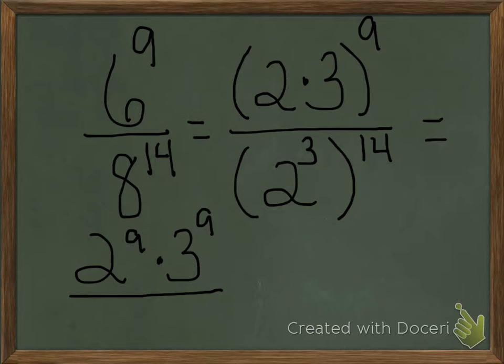2 to the 3rd power, all raised to the 14th power as 2 to the 42nd power. We have multiplied 3 times 14.